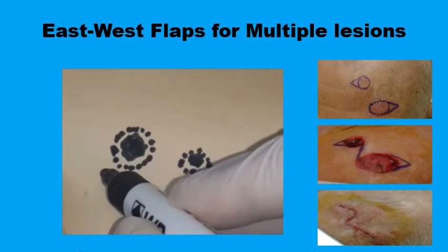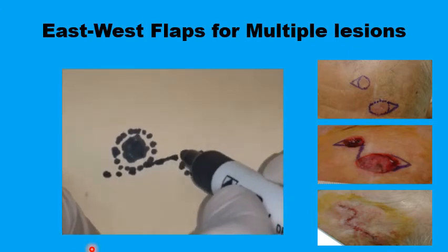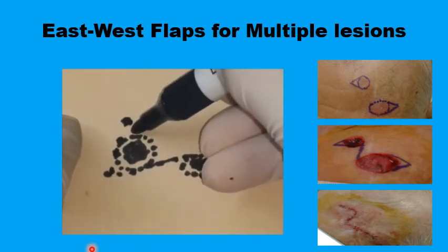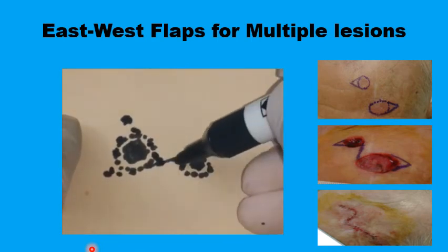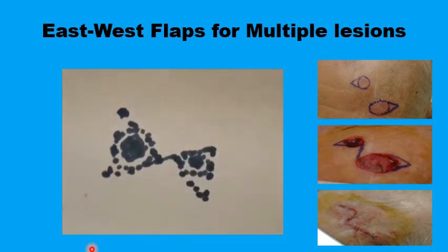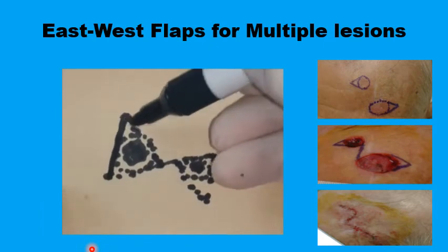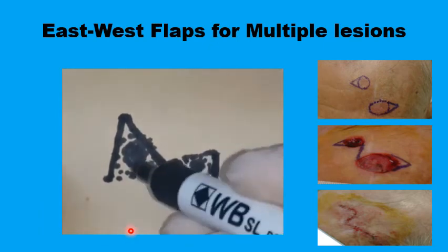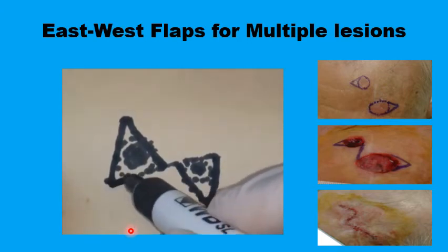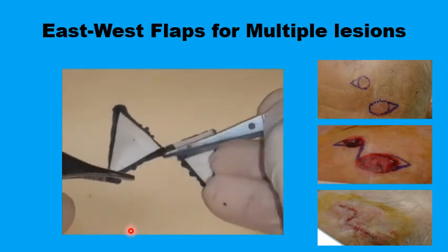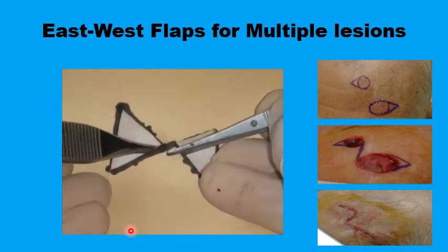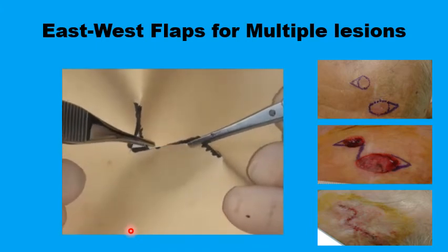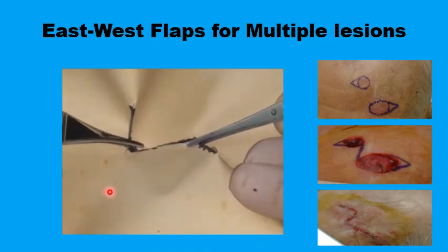With two smaller lesions, you draw the line between them to form the shared base of the two triangles. The two triangles are then drawn as isosceles triangles with 30 degrees at the apex. As shown, the two triangles are fairly similar but not identical. Once the lesions are excised, you mobilize the skin by advancement in opposite directions, and you end up with a three-line scar.